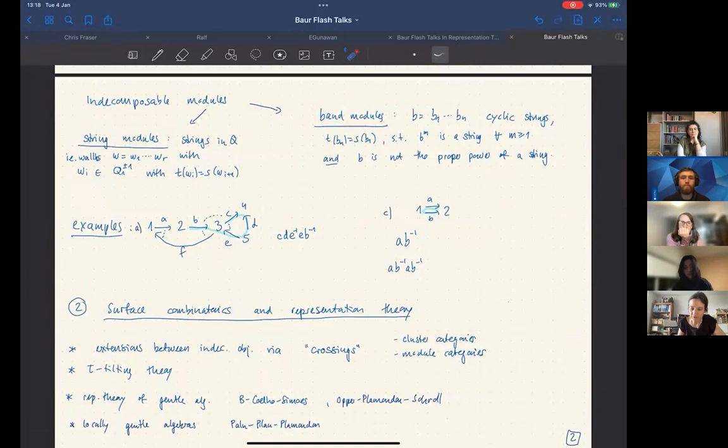So we have string modules and band modules and the string modules arise from words in the arrows. So let me just briefly write that we have a walk in the quiver where each element or letter is an arrow or its inverse.